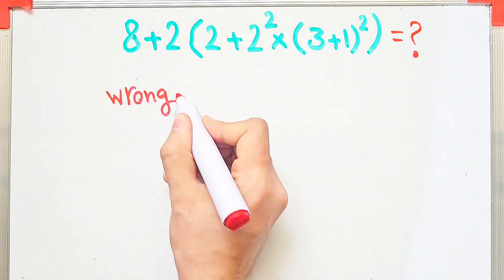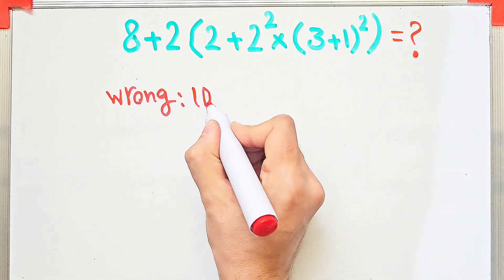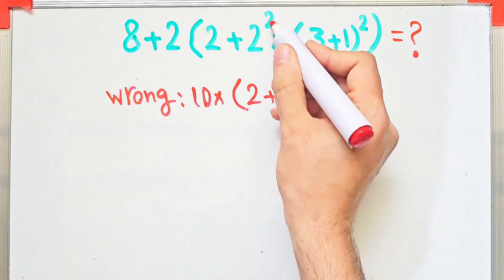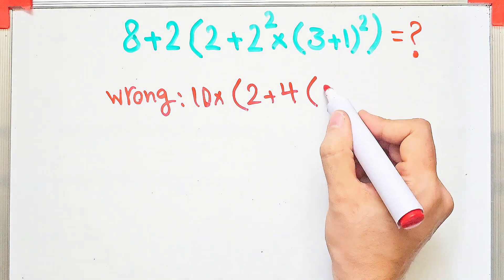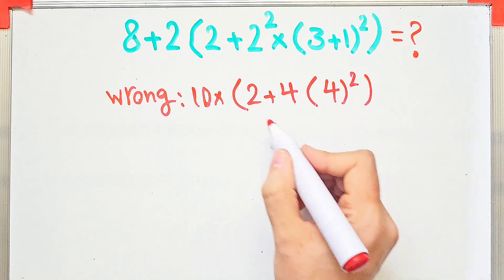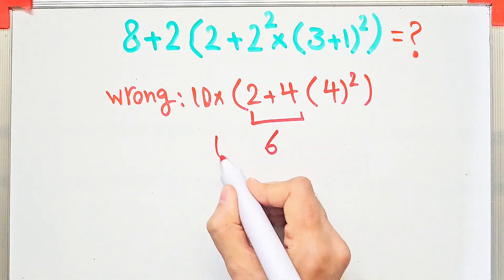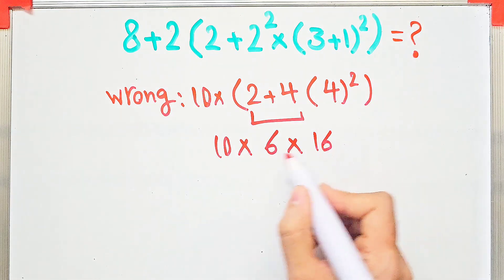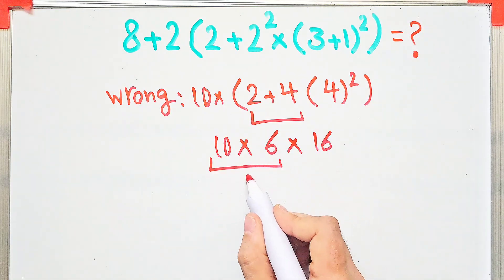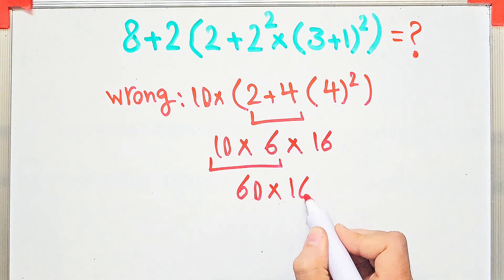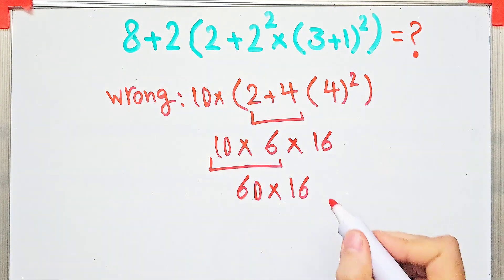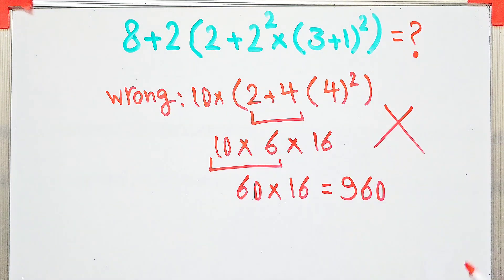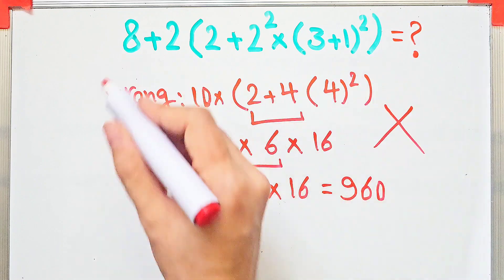Can you solve it? Here is the wrong way of solving this question. Some people solve it like this: 8 plus 2 equals 10; 10 times 2 plus 2 to the power of 2 which equals 4, then times 3 plus 1 which equals 4, then to the power of 2; 2 plus 4 equals 6; 10 times 6 equals 60, then times 16 equals 960. But this answer is definitely wrong.